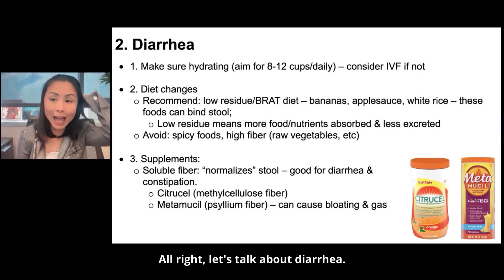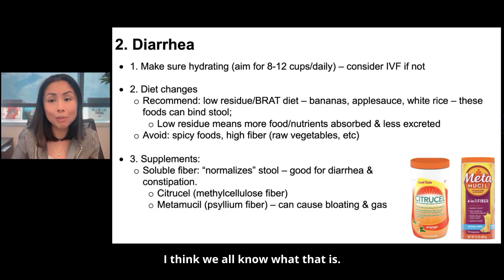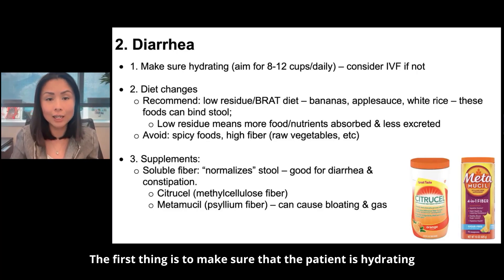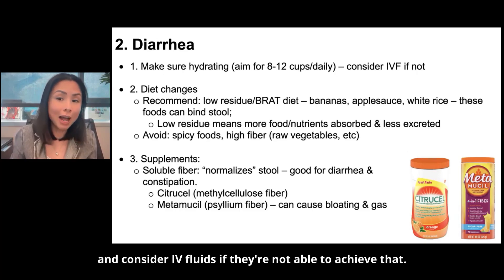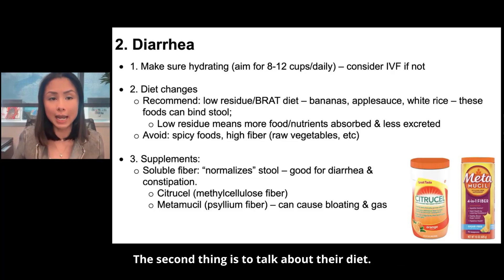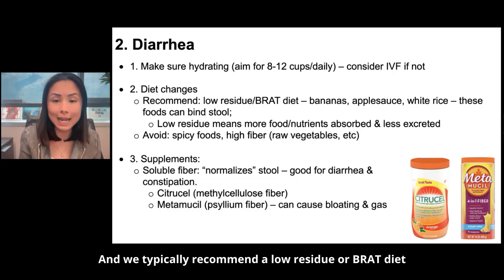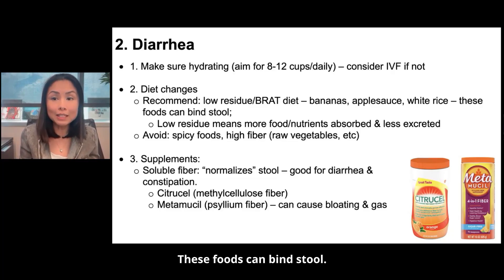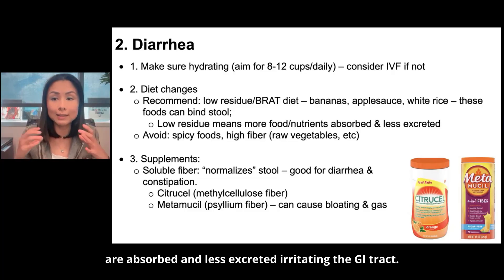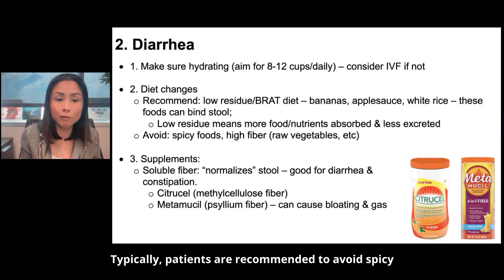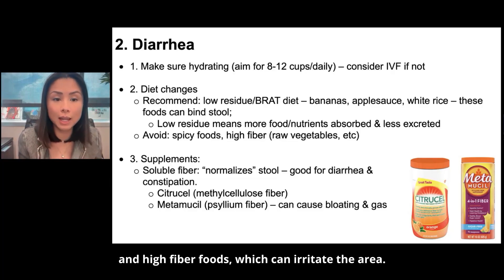Let's talk about diarrhea. The first thing is to make sure the patient is hydrating — aim for 8 to 12 cups of fluids daily and consider IV fluids if they're not able to achieve that. The second thing is to talk about their diet. We typically recommend a low-residue or BRAT diet with bananas, applesauce, and white rice — these foods can bind stool. Low residue means more nutrients are absorbed and less is excreted, irritating the GI tract. Patients are typically recommended to avoid spicy and high-fiber foods.